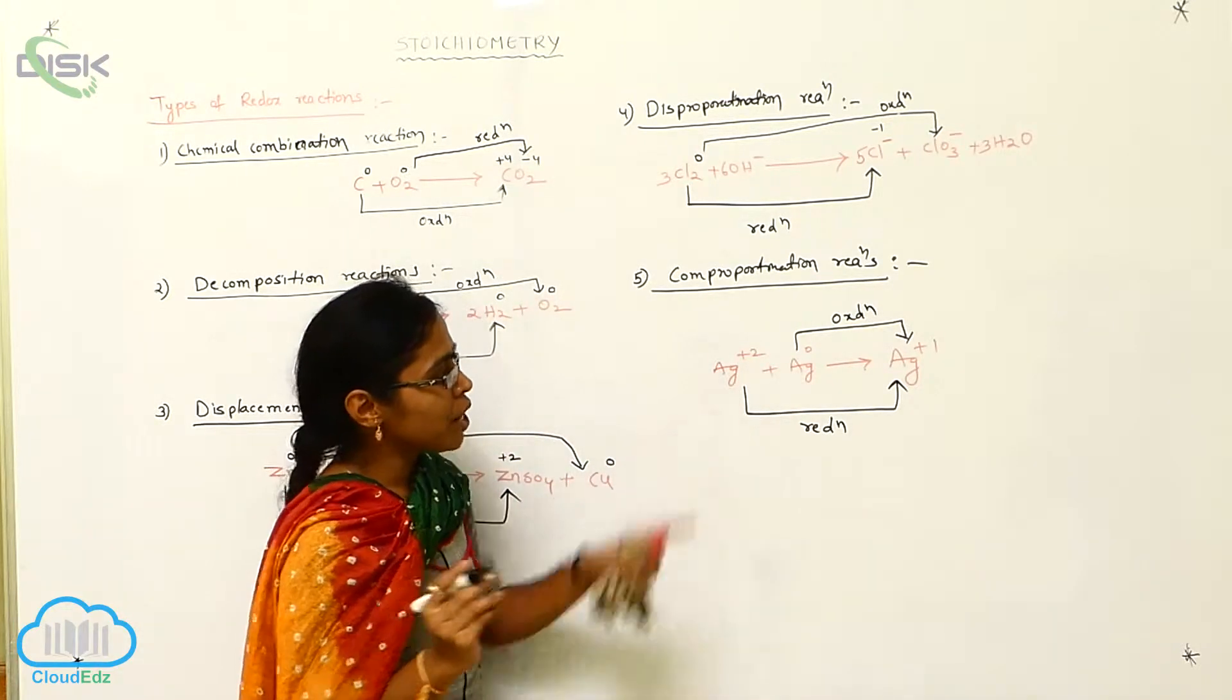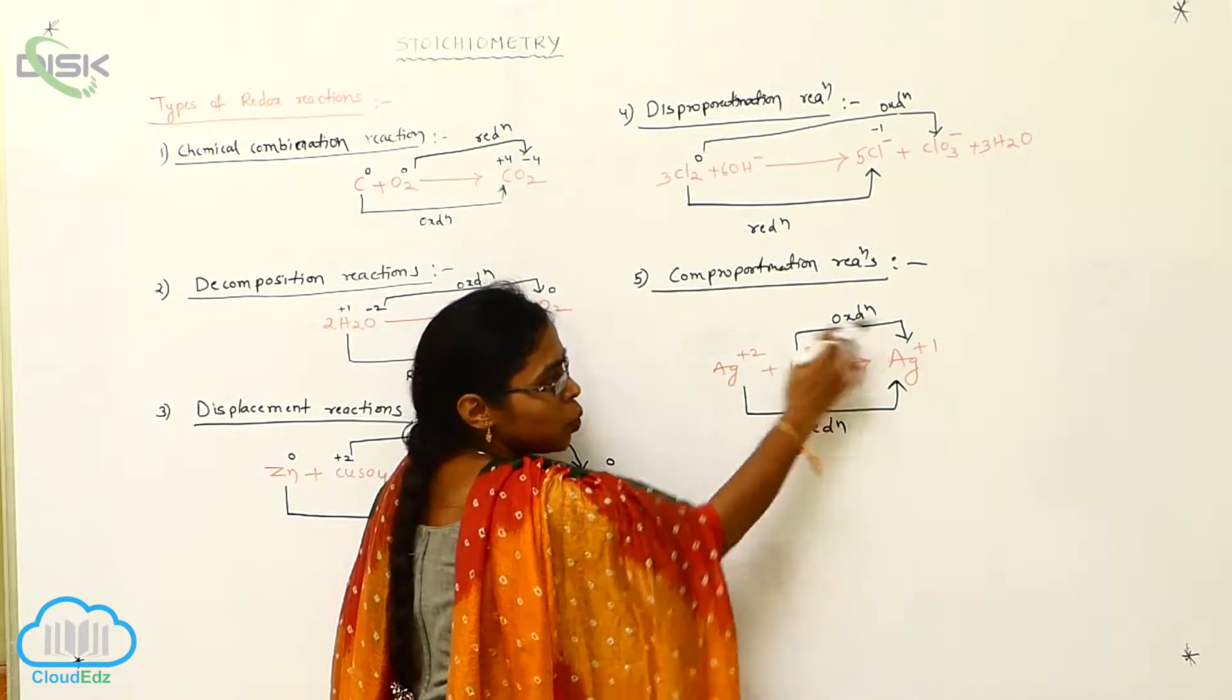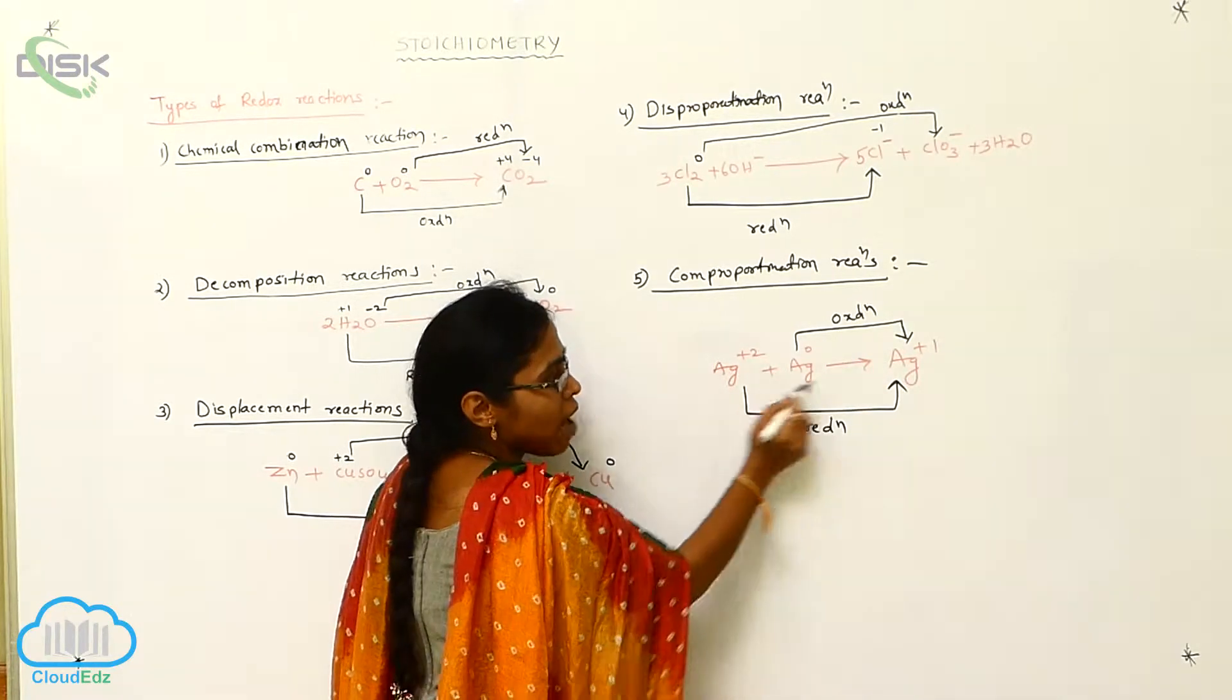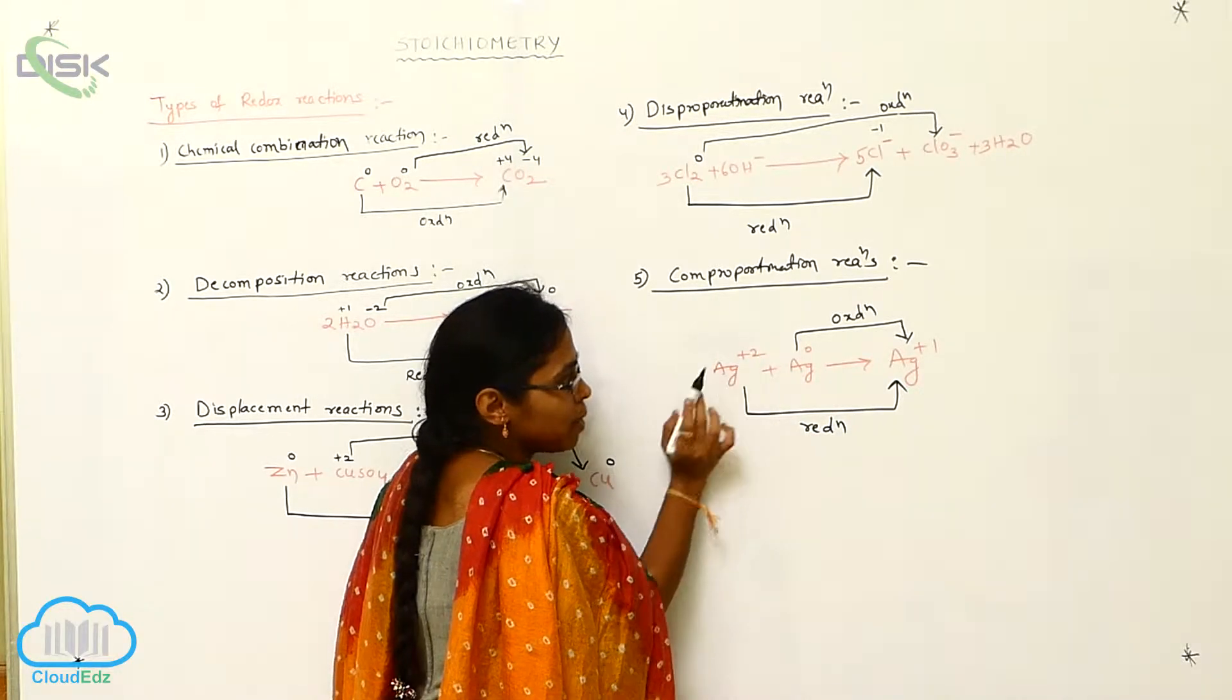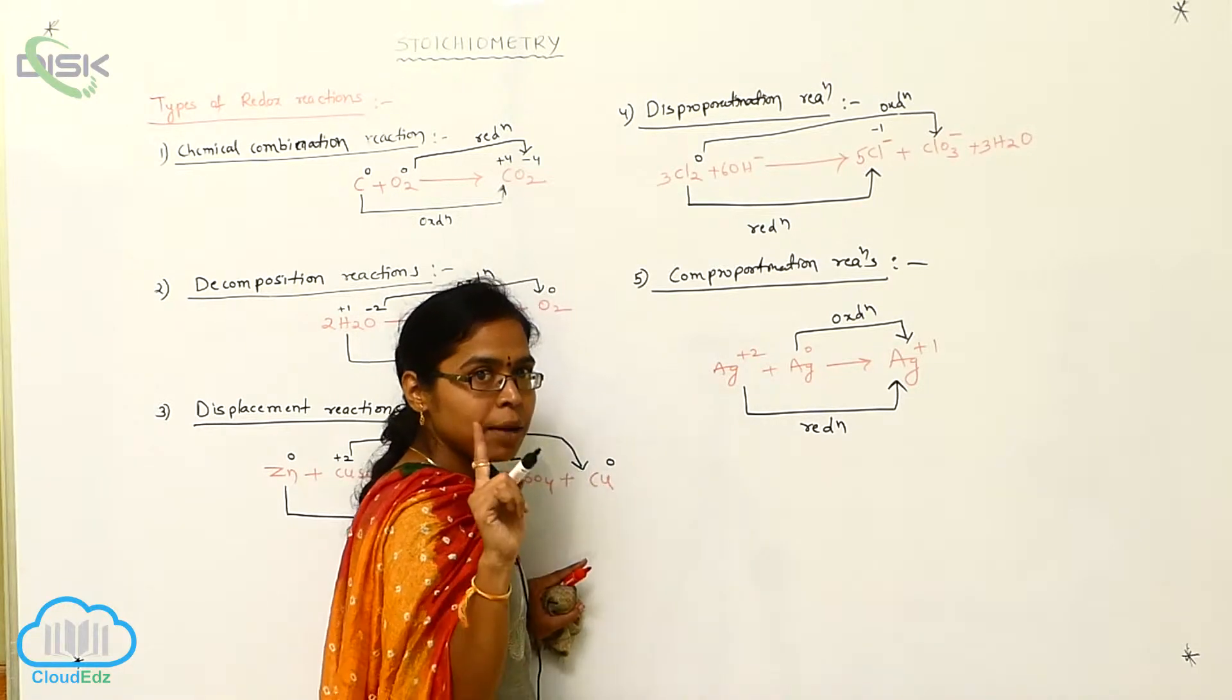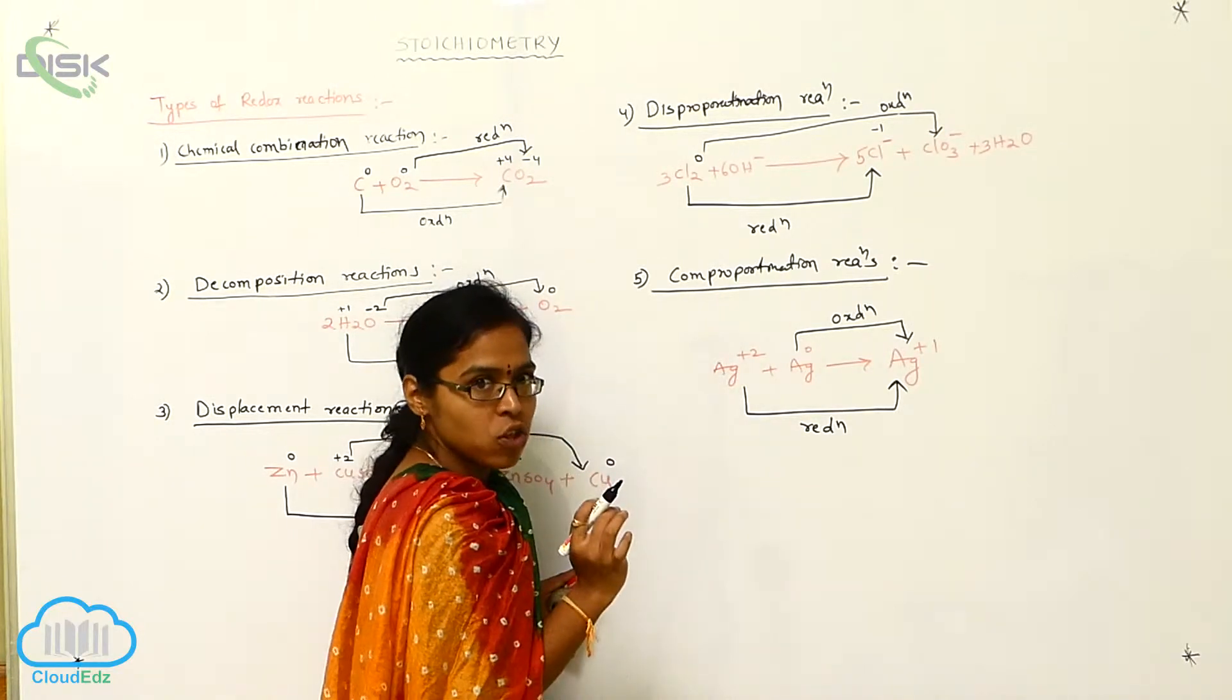Now I want to give the definition. The same element possessing different oxidation states - three total, one is the same element: silver, silver, silver, but having three different types of oxidation states. In the reactant molecules, this silver can have a +2 charge, this silver can have a 0 charge. That means the same element with different oxidation states will involve in comproportionation reactions.